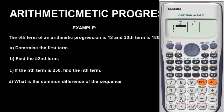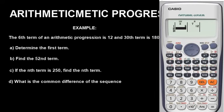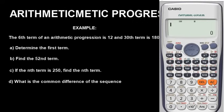Once you get to this point, begin to input the values respectively. The x values represent the number of terms. So the 6th term is 12: go to y and press 12 under x=6. The 30th term is 180: go to y and press 180 under x=30. As you input the values, they are stored in the calculator automatically.